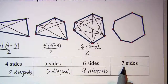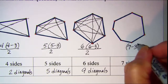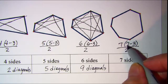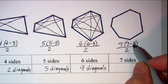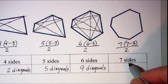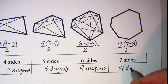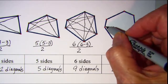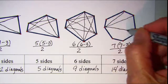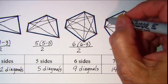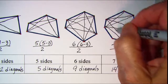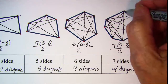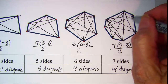For seven sides, we have seven minus three times seven — that's the number of vertices — divided by two to avoid duplicating. Seven minus three is four, seven times four is 28, divided by two gives 14. Let's count to confirm: one, two, three, four, five, six, seven, eight, nine, ten, eleven, twelve, thirteen — and that gives us 14 diagonals.